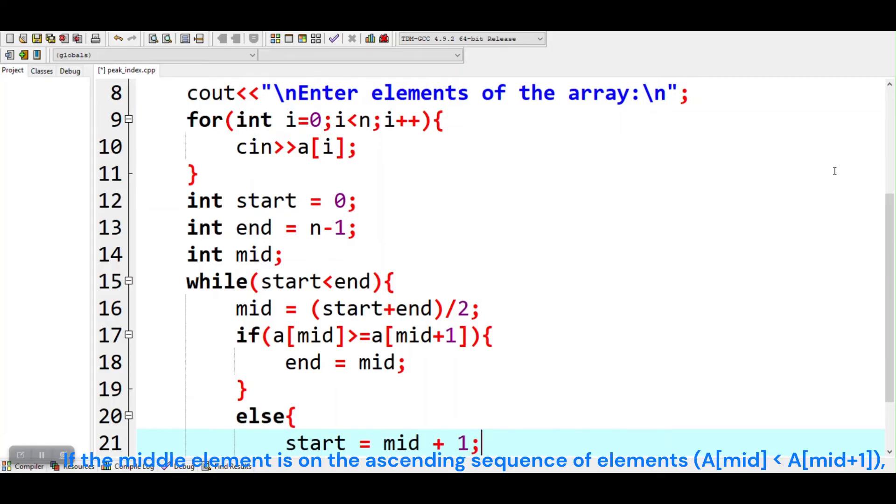If the middle element is on the ascending sequence of elements, a[mid] smaller than a[mid+1], then it means that the peak element will be on the right side of this middle element. Hence we will reduce the search space between mid+1 and the end element.